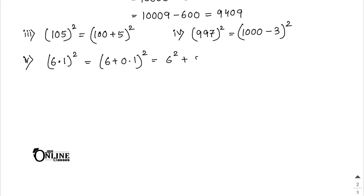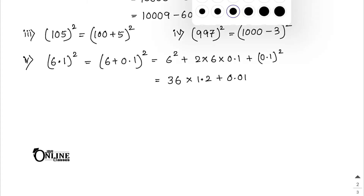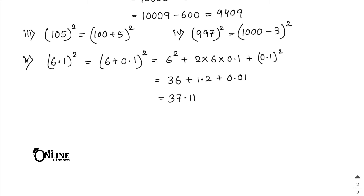6.1² = (6 + 0.1)² = 36 + 2×6×0.1 + 0.01 = 36 + 1.2 + 0.01 = 37.21.